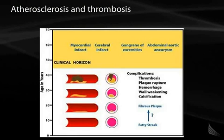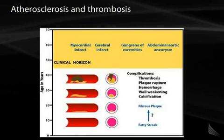This diagram shows a general progression in worsening atherosclerosis from age 10 through age 70. There is a higher risk for developing myocardial infarcts, cerebral infarct, gangrene, and abdominal aortic aneurysm in patients that have developed complicated plaques, especially around age 40.